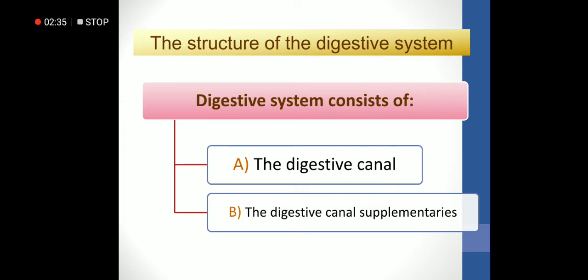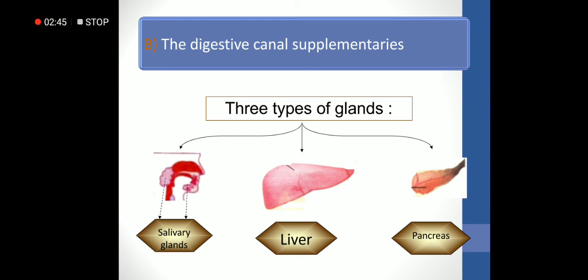The structure of the digestive system: the digestive system consists of the digestive canal and the digestive canal supplementaries. Supplementaries are three types of glands: salivary glands, liver, and pancreas.